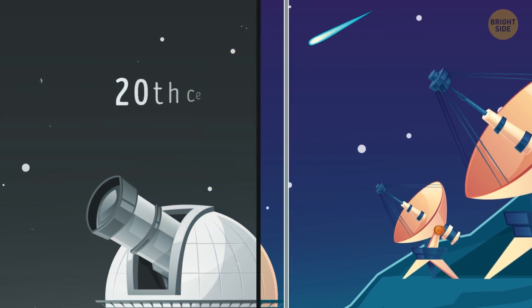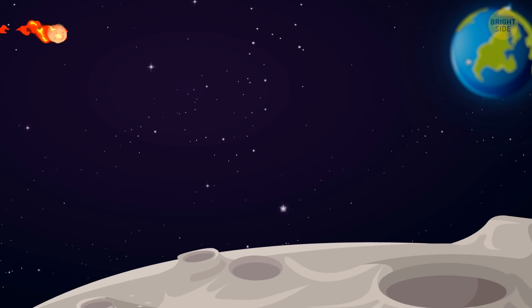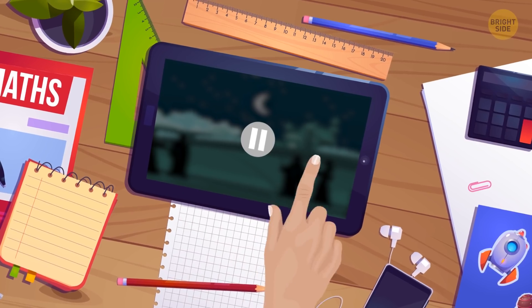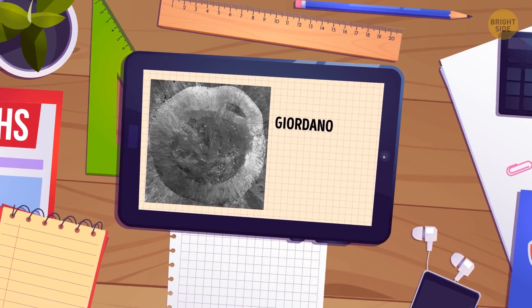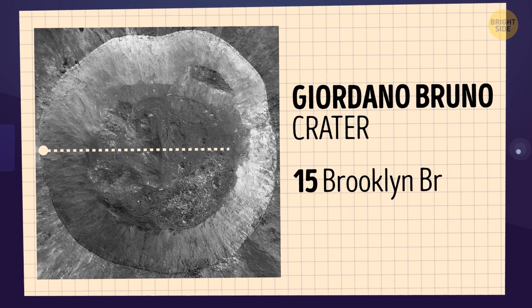It wasn't until the 20th century that scientists tried to explain the phenomenon. They theorized that a large asteroid collided with the Moon at the time. And it was this asteroid that should be blamed for creating the Giordano Bruno crater, 15 Brooklyn bridges wide.